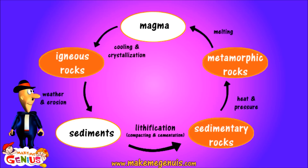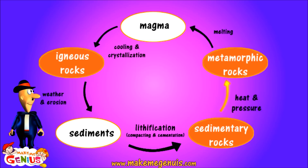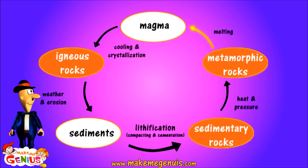These sedimentary rocks get changed into metamorphic rocks again by heat and pressure. Now, these metamorphic rocks change into magma due to heat inside the earth. This way, the cycle continues.